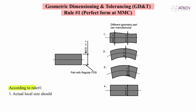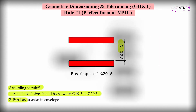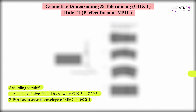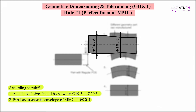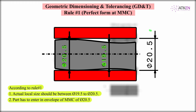Let's take each part and understand how Rule 1 applies. According to Rule 1, the actual local size should be between diameter 19.5 and diameter 20.5, and the part has to enter the envelope of MMC of diameter 20.5. For the first case, everywhere the actual local size is within the range and it enters the envelope of diameter 20.5, so it follows Rule 1.